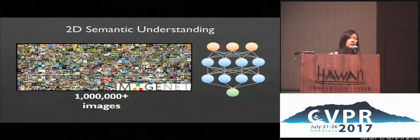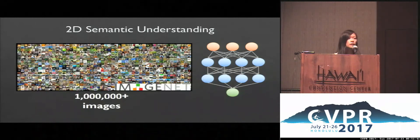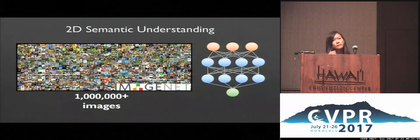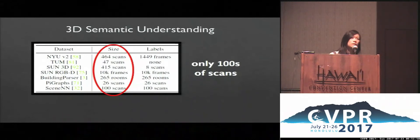Recently, there's been a lot of progress in 2D image understanding, mainly fueled by the availability of big image datasets. But for 3D, we're limited by the size of existing datasets, which have only hundreds of labeled scans.